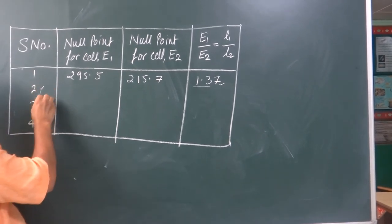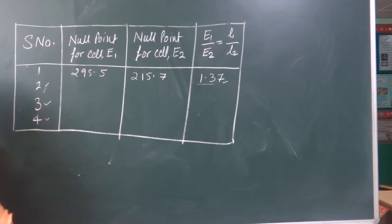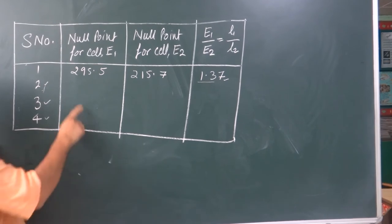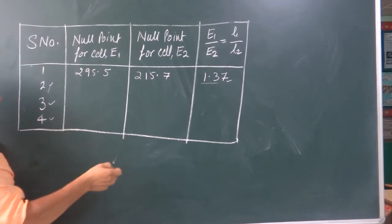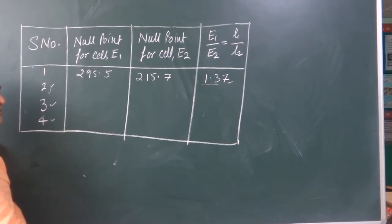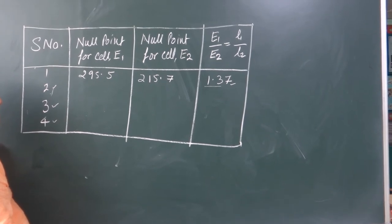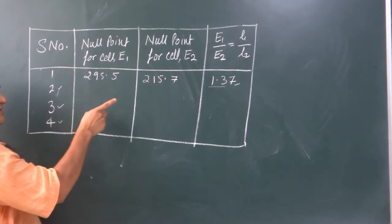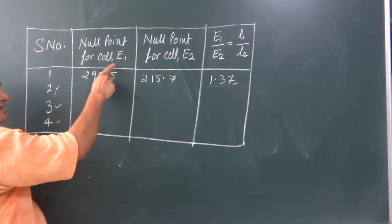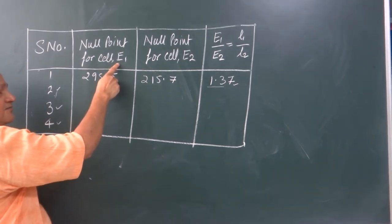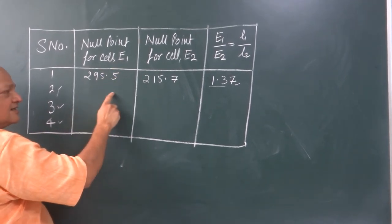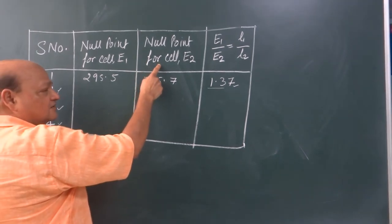That's how you can compare EMF of two cells. For taking 3rd and 4th readings, not much effort you have to do. Every time you move the rheostat a little towards one direction, then automatically the ammeter reading will change. Keep it fixed, and again find null point for cell E1, write it down here. Then null for cell E2, write it down here.